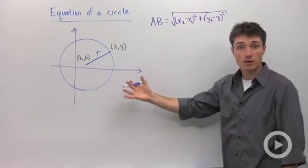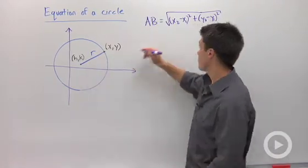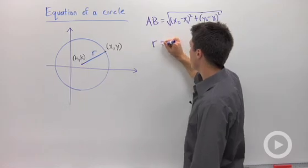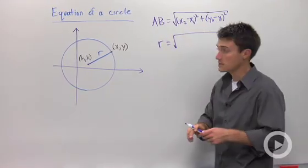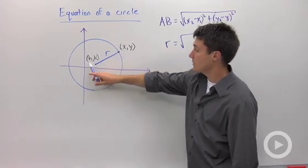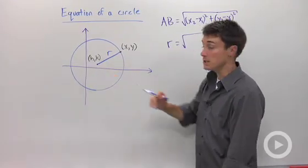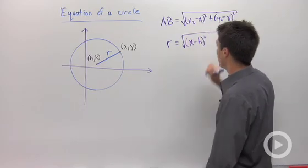So let's apply that to this problem. AB is actually the radius of this problem, that's what we're trying to find. So the radius is equal to the square root. If I subtract my x's, I see that I have x as this point, and my center of my circle is at h. So we're going to say this is (x - h) quantity squared.